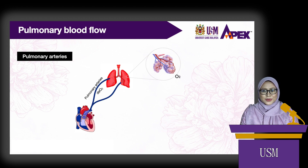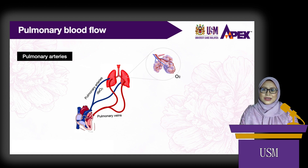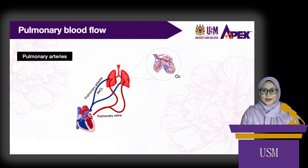The oxygenated capillary blood then drains into venules, small veins, and into the pulmonary vein, and the blood will be delivered to the left atrium of the heart to be delivered to the rest of the body via systemic circulation. This blood circulation between the heart and the lungs is referred to as pulmonary circulation.